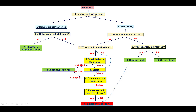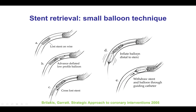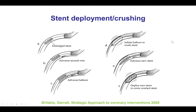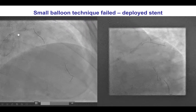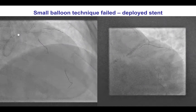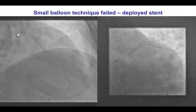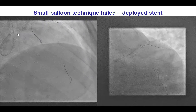We now had a situation of a stent that was lost within the coronary artery. The important question was whether to try to retrieve it or to deploy or crush it. In this case, the stent was located within the proximal LAD inside the previously placed stent. We made a brief attempt to retrieve the stent using the small balloon technique — advancing a small balloon through the stent, inflating it distally, and pulling the whole assembly back. Unfortunately, retrieval failed, which is not uncommon because the stent had become deformed, changing its profile.